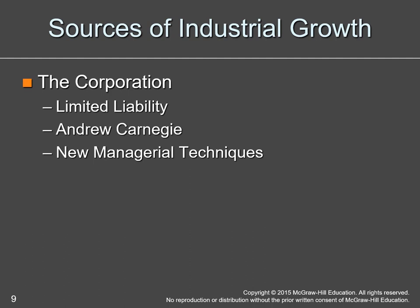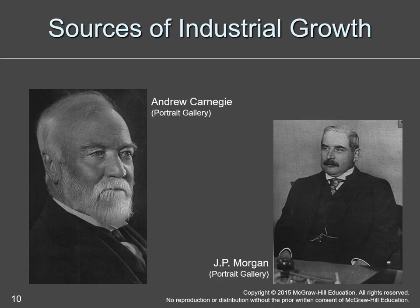Carnegie's managerial techniques involved layers of managers focused on finding good people who can produce at a high rate. In the corporation that allows for production and promotion of workers. JP Morgan is the banker who bought out Andrew Carnegie, creating the first billion-dollar company at that time.